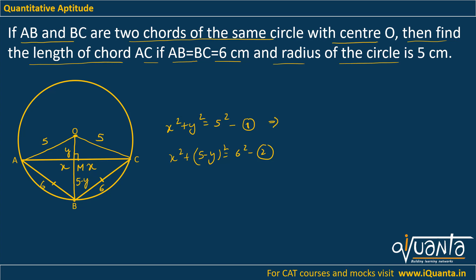So from this equation I can say that X square will be equal to 5 square minus Y square. From this equation I can say that X square will be equal to 6 square minus (5 minus Y) square. So I can equate X square in both.